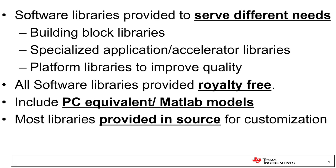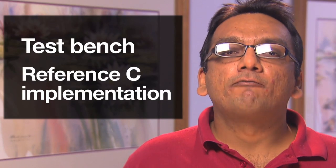Software libraries are provided to serve different needs. The first set of software libraries are the building block libraries. These libraries are provided completely in source and include optimized kernels that serve as the building blocks for various signal processing applications. The provided source can be used to understand how to approach software optimization on C6X devices, and it also allows for customization. The libraries include test bench and reference implementation for each kernel. The test bench not only serves as a usage example, it also helps to verify the customizations for correctness.